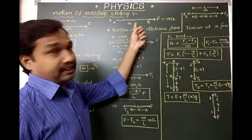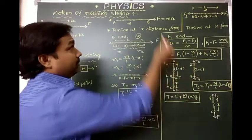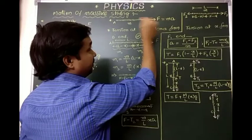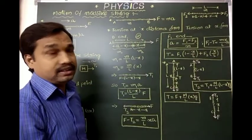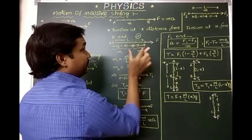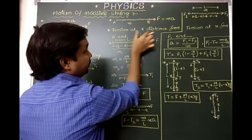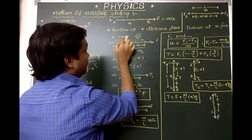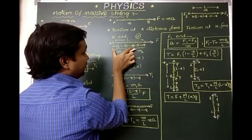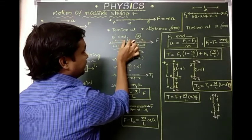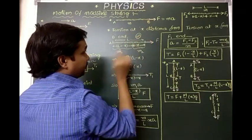Now we consider only the string. The mass of the string is m, and we apply a force at one end. The minimum force required to pull with acceleration a is F equals m times a, according to Newton's second law. We consider a tension at some distance x from end B, with the remaining distance being (l minus x), where l is the total length.